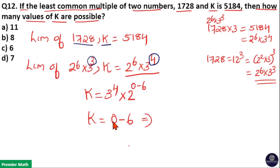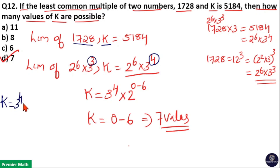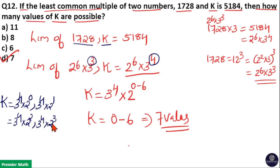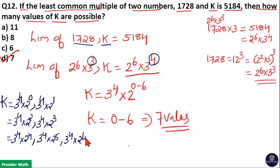That is, K can have power-of-2 values from 0 to 6, giving a total of 6 + 1 = 7 values of K possible. So option D is your answer. K can be 3 raised to 4 into 2 raised to 0, or 3 raised to 4 into 2 raised to 1, and so on up to 3 raised to 4 into 2 raised to 6. That is, a total of 1, 2, 3, 4, 5, 6, and 7 values are possible.